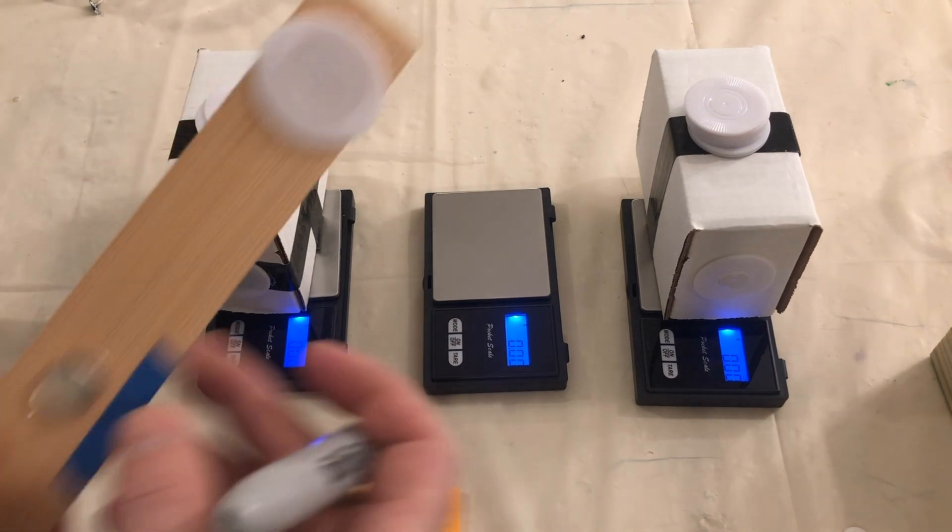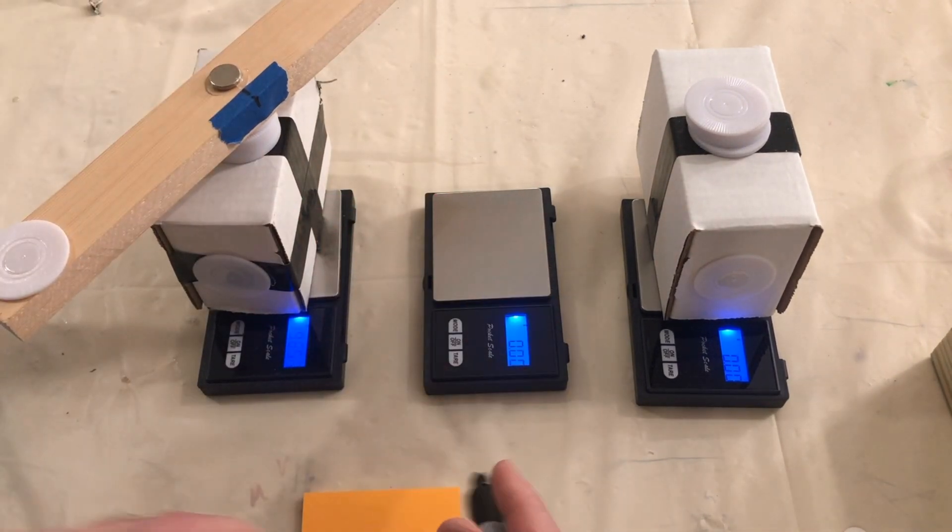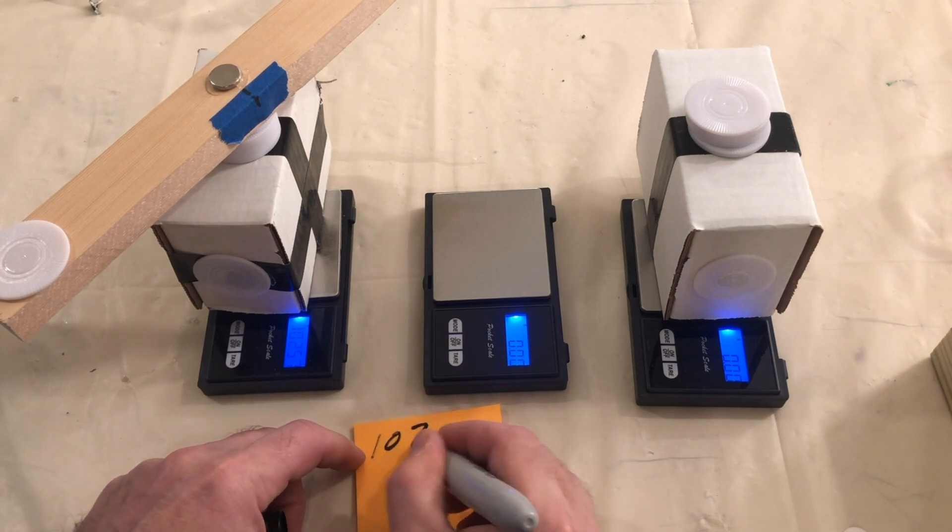We'll now weigh the wooden beam that has the large magnet on it on top of a single scale and record the number the scale registers.